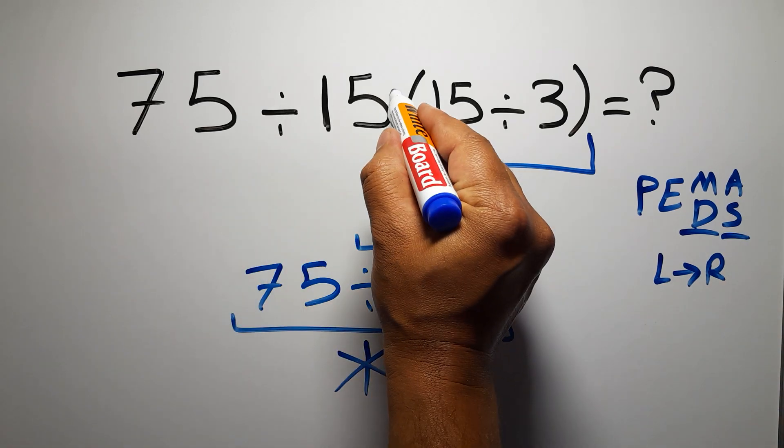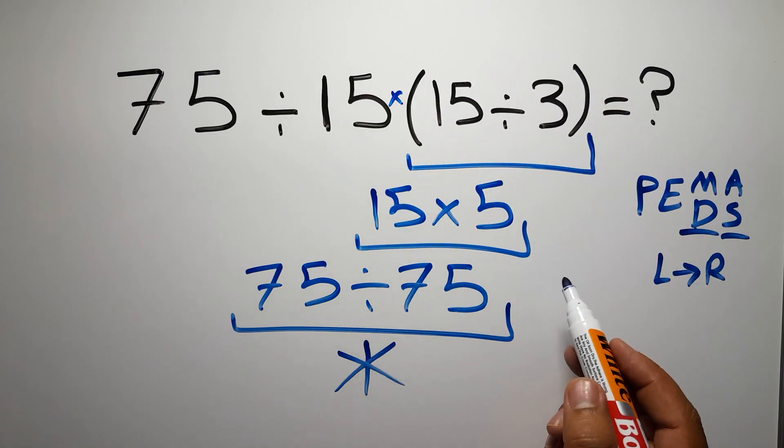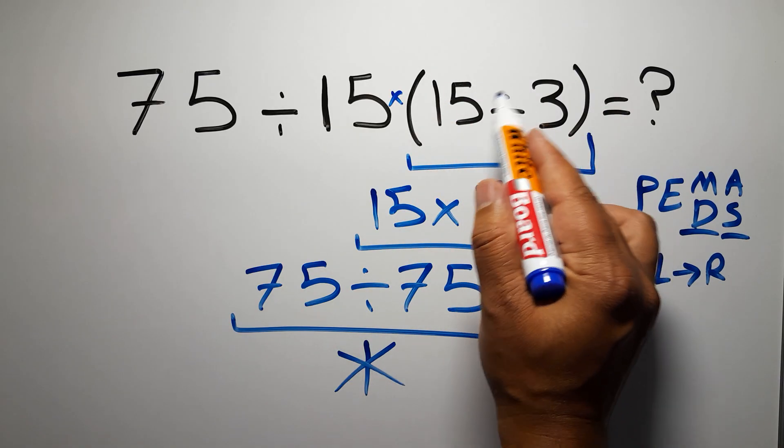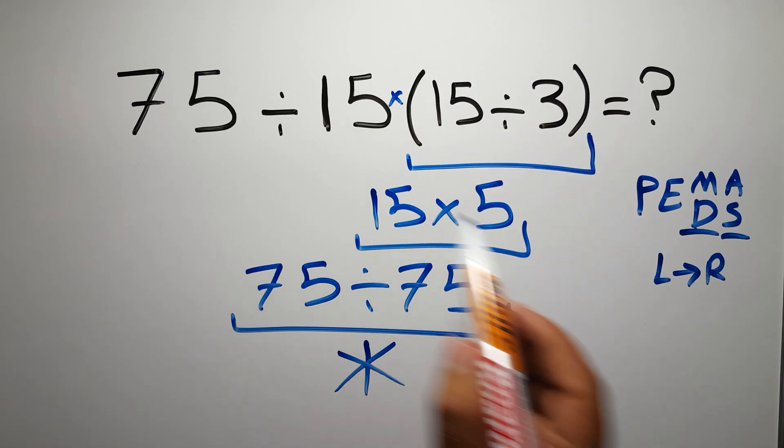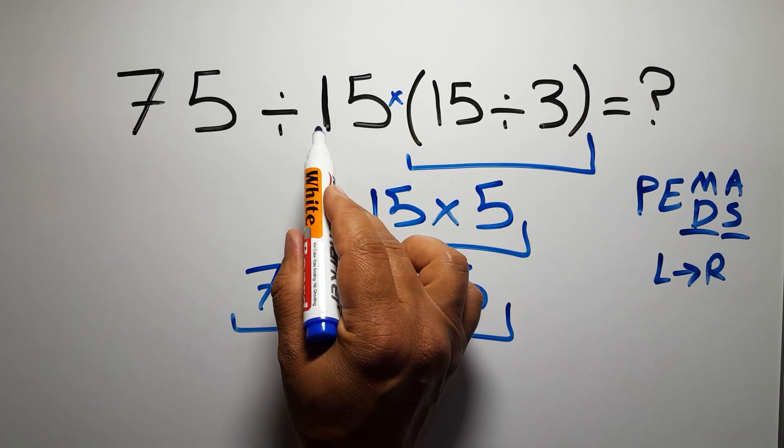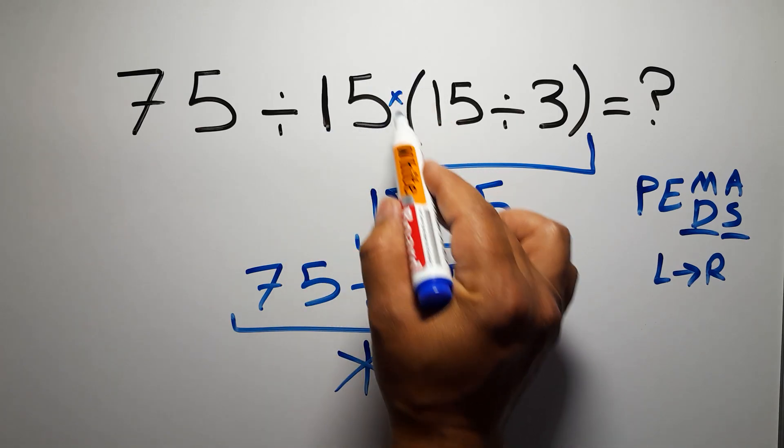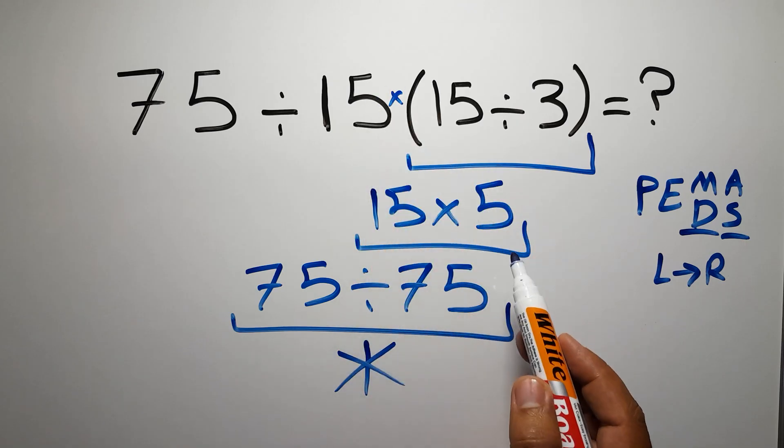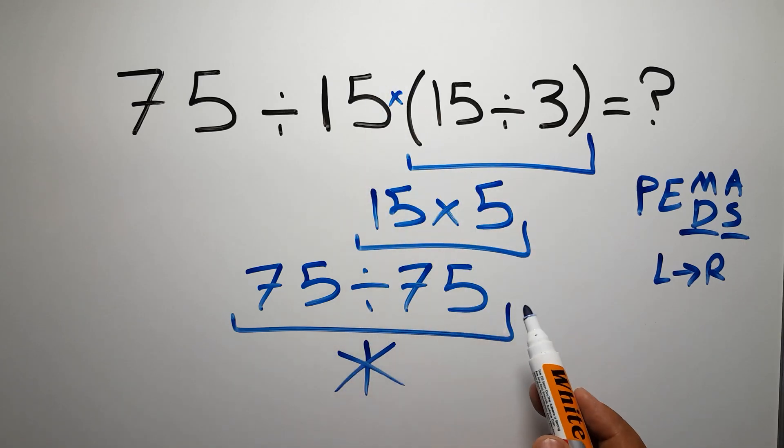One division, one multiplication, and one parentheses. Inside these parentheses we have one division. We need to pay attention that here we have a multiplication, because in mathematics when a number is placed next to parentheses it means multiplication. We usually don't write the multiplication sign for brevity.